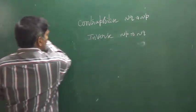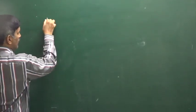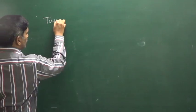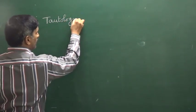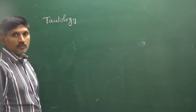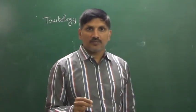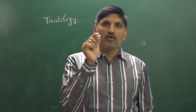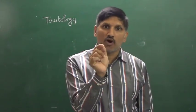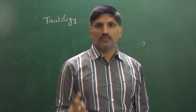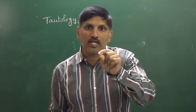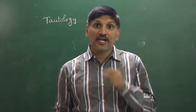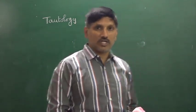Next I am going to discuss about what is a tautology. Tautology means the truth table, for all possibilities, has truth value true. For all possibilities, its truth value is true — then it is said to be a tautology.